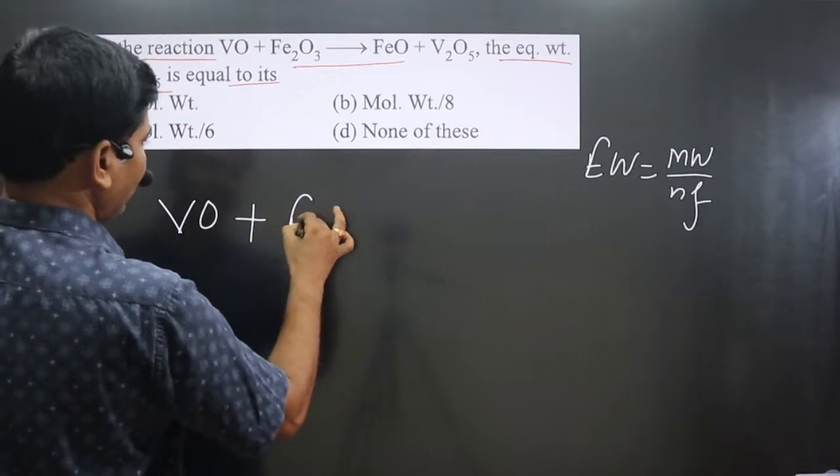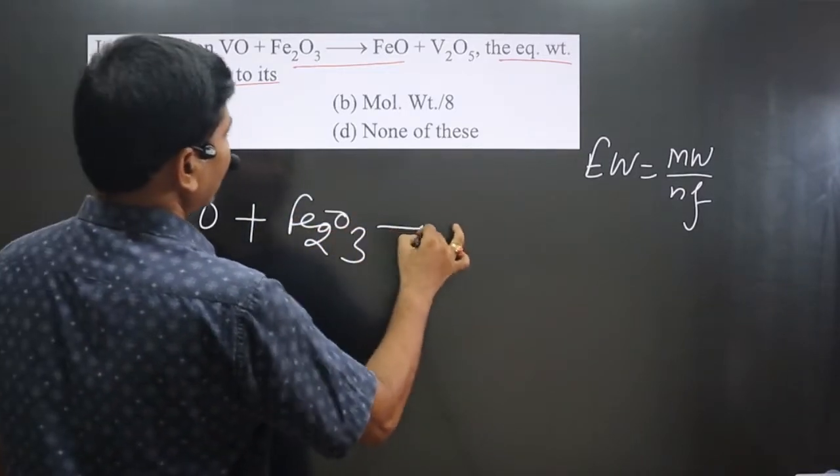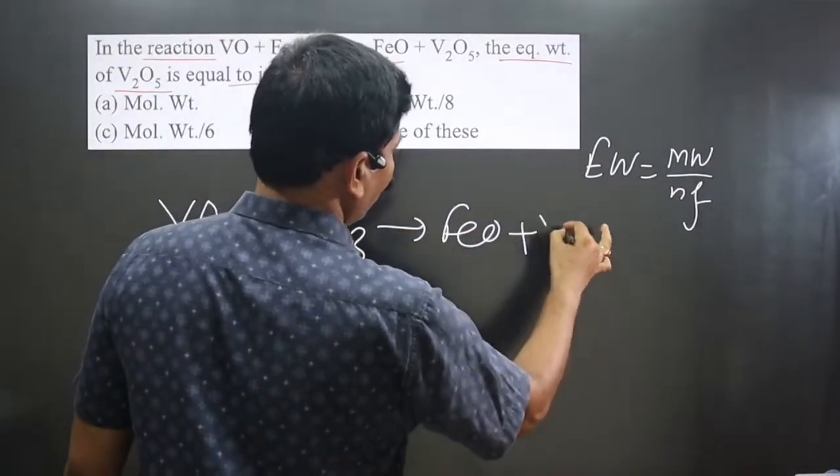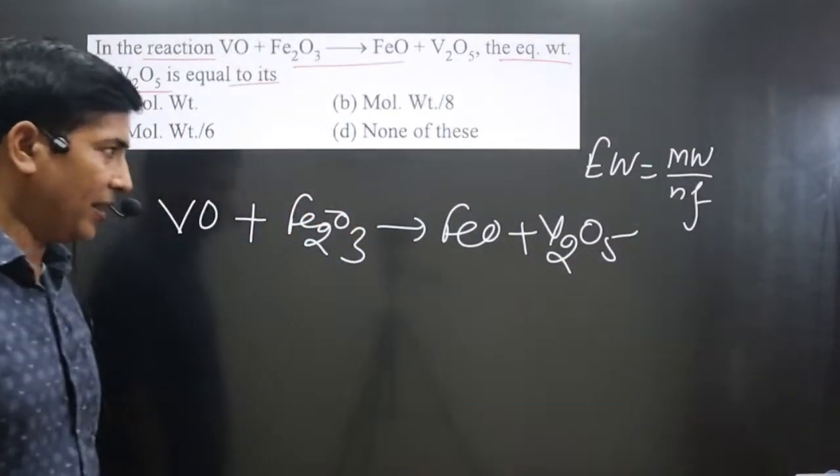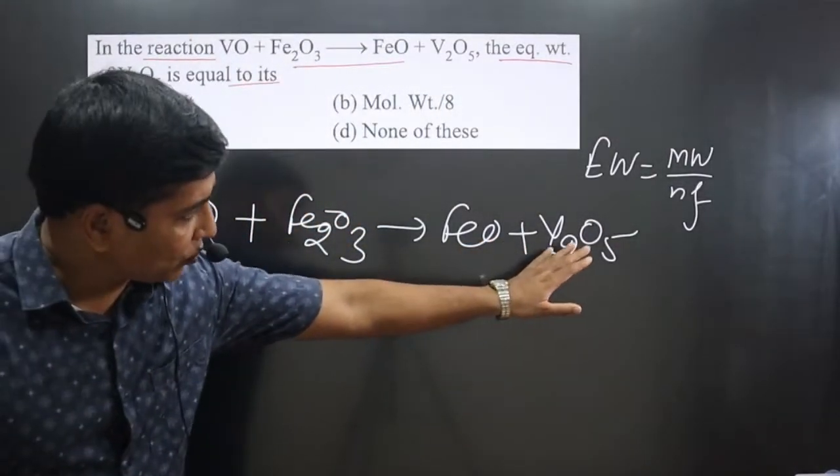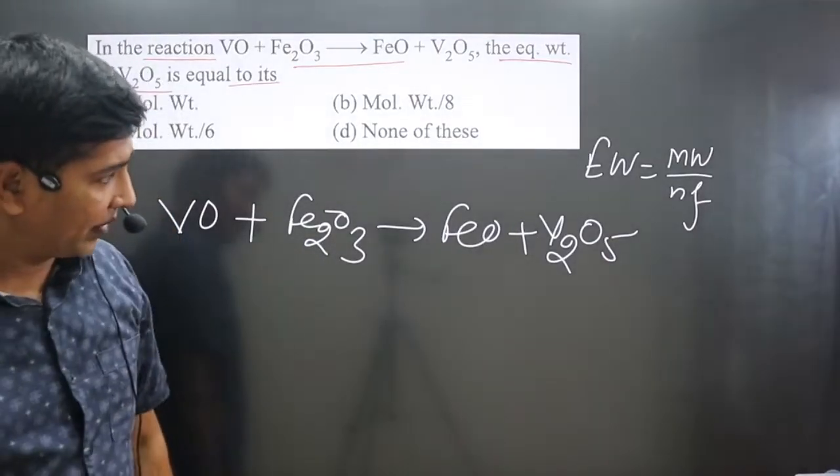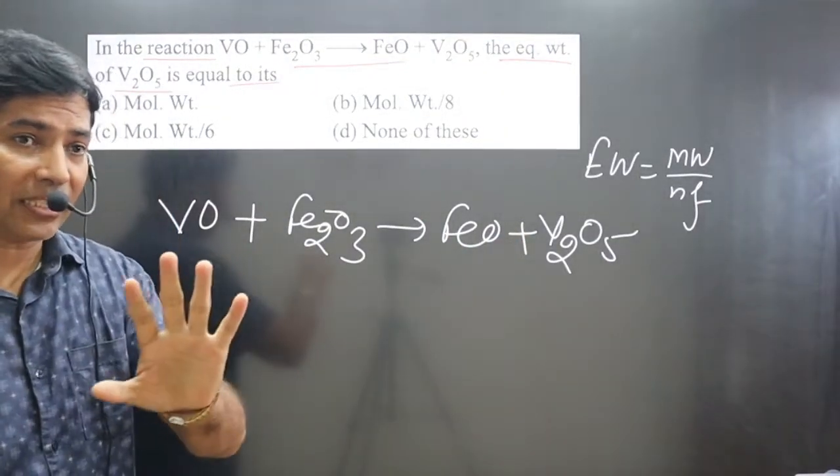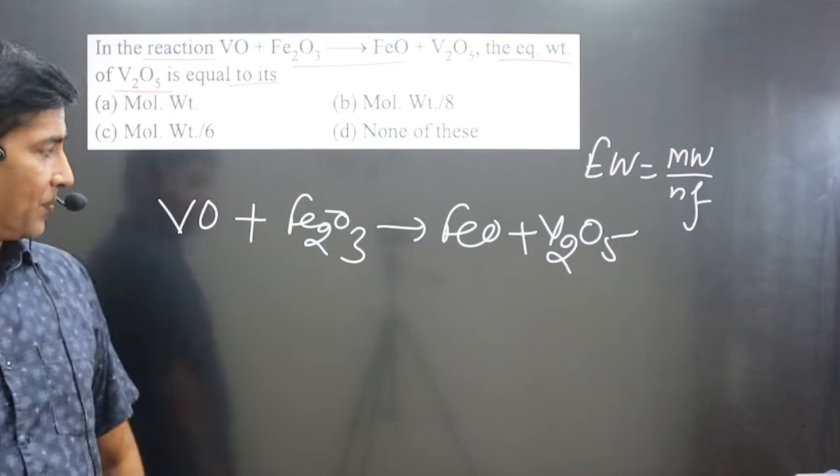VO plus Fe2O3, and then on the other side FeO, and then we have V2O5. Now pay attention very carefully. In V2O5 there are two V atoms, so we need to calculate the oxidation number for those two V atoms.